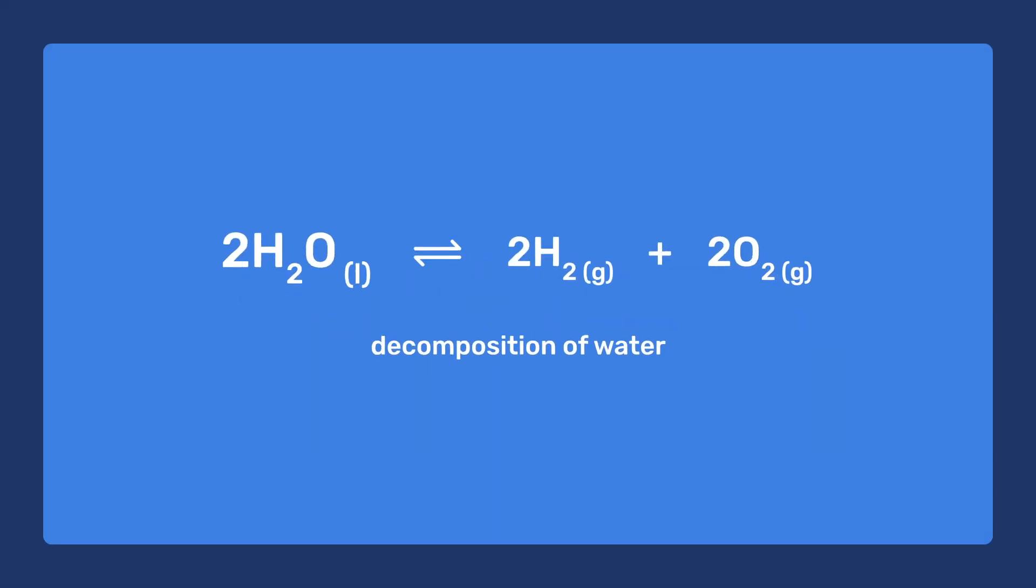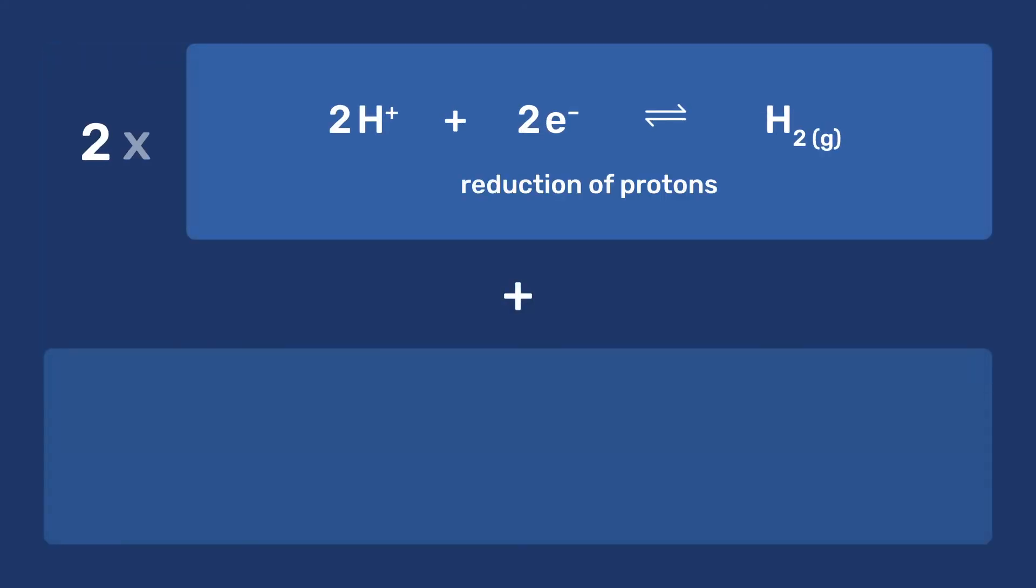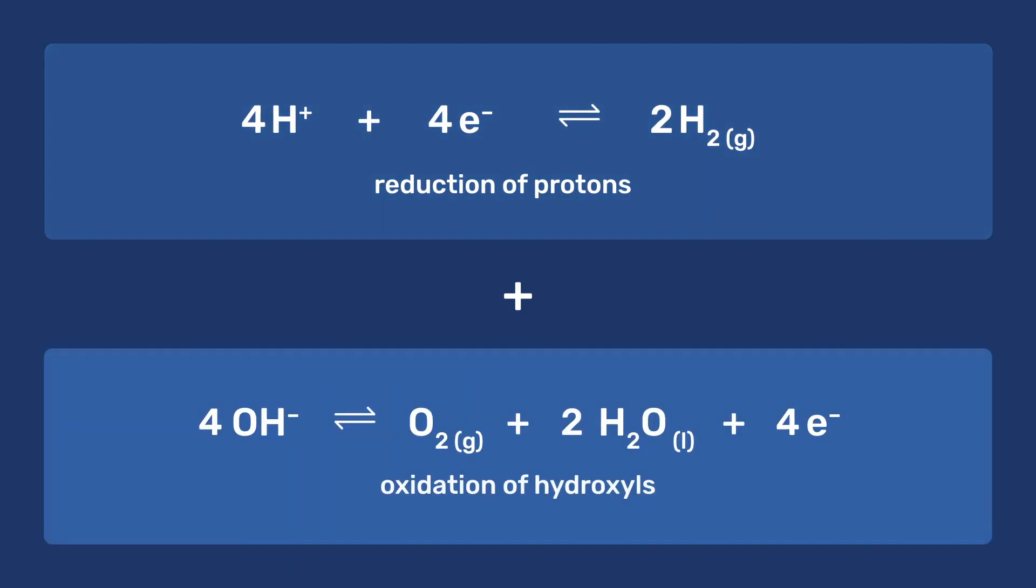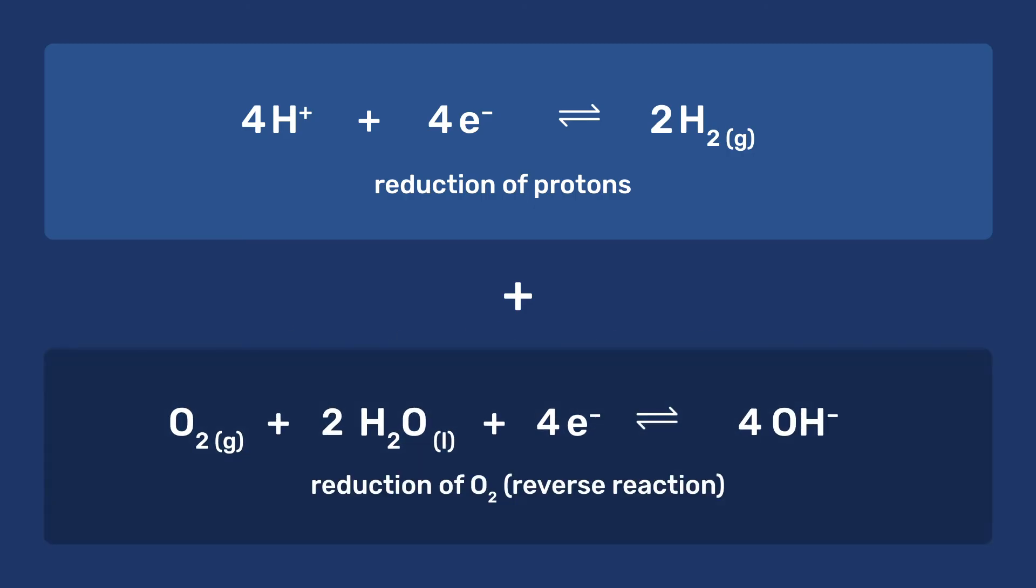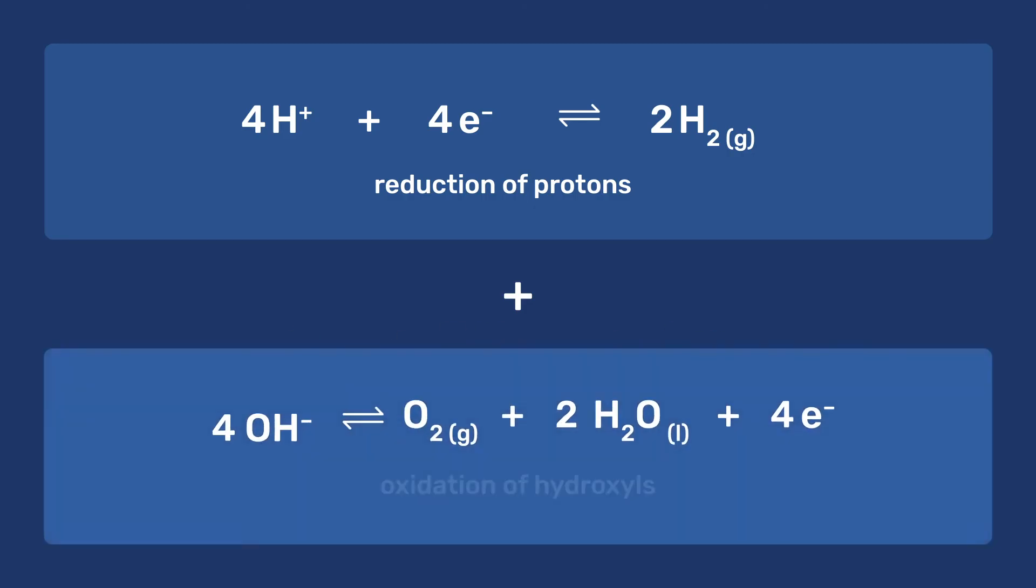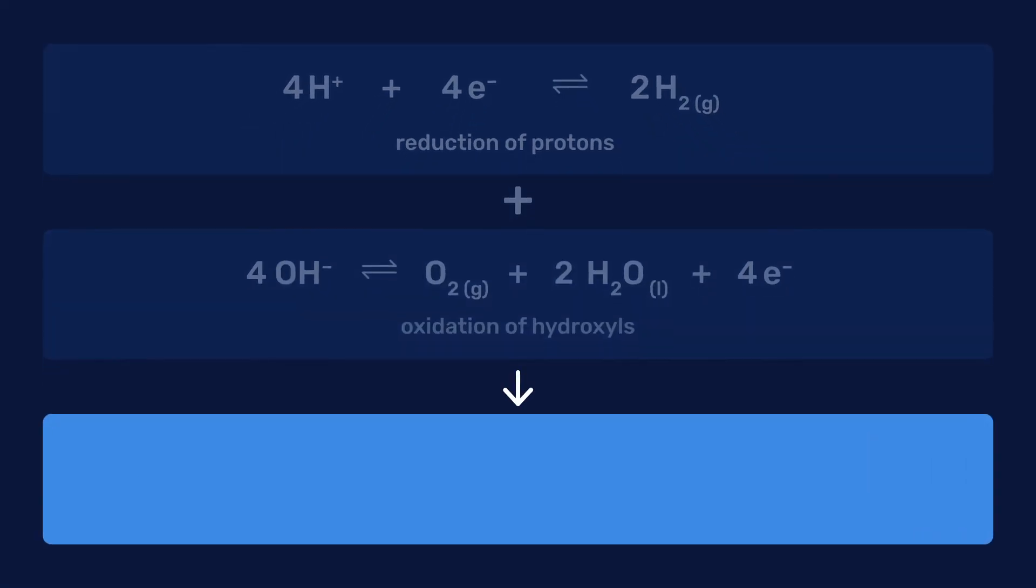To decompose water into hydrogen and oxygen by electrolysis, one should combine twice the reduction of protons with once the oxidation of hydroxyls, which is the reverse reaction to oxygen reduction. The resulting reaction involves four hydroxyls reacting with four protons to give two water molecules, two hydrogen gas molecules, and one molecule of oxygen gas.